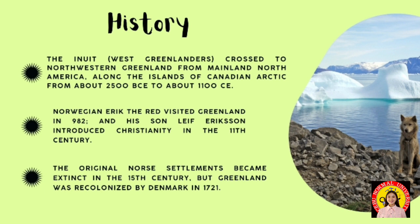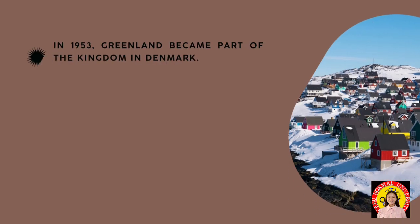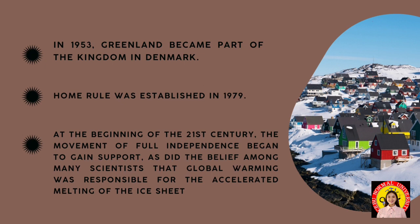Greenland fell under the protection of the United States during the German occupation of Denmark in World War II, and was returned to Denmark in 1945. Following the war, Denmark responded to Greenlanders' complaints over its administration of the island. The monopoly of the Royal Greenland Trading Company was abolished in 1951, and after Greenland became an integral part of the Kingdom of Denmark in 1953, reforms were undertaken to improve the local economy, transportation systems, and educational systems.